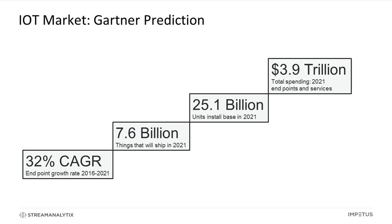Looking at the IoT market perspective: there's going to be about $4 trillion spent in 2021 on IoT endpoints and services, per a Gartner prediction from December 2017. There will be 25 billion units of installed base in 2021, with 7.6 billion new devices shipping that year. From 2016 to 2021, there's a 32% compound annual growth rate for this marketplace. McKinsey and other leading analysts tally around the same range — a multiple-trillion-dollar market opportunity.